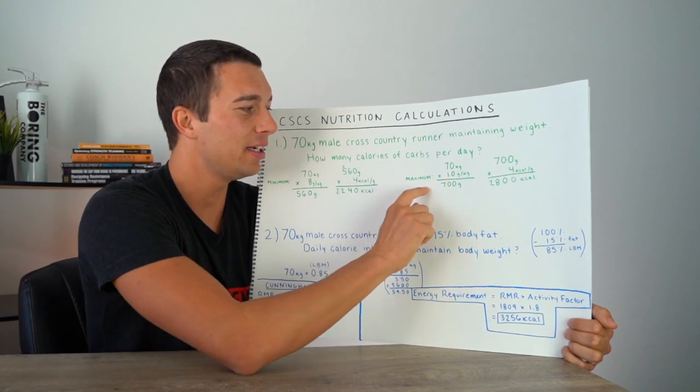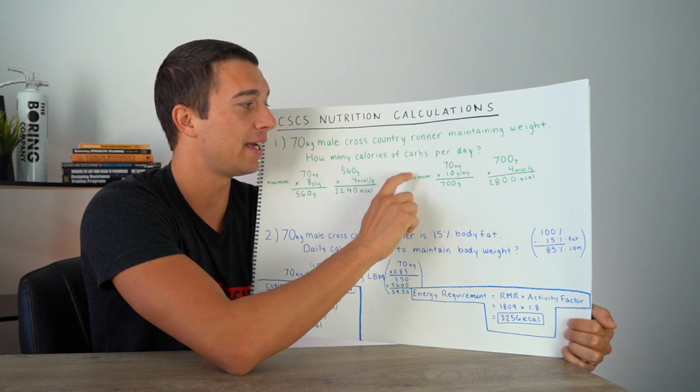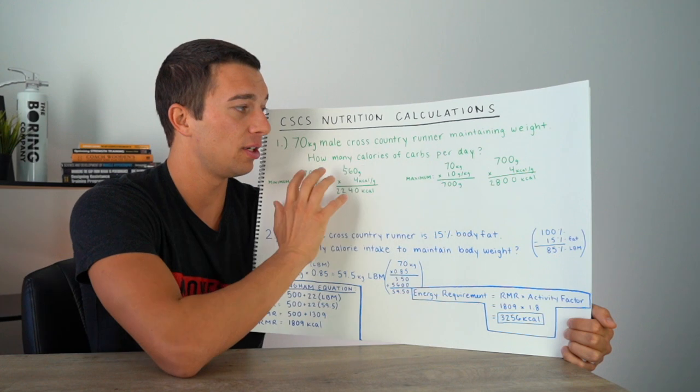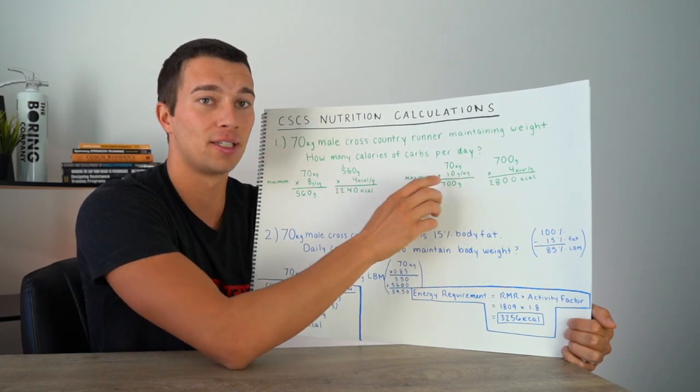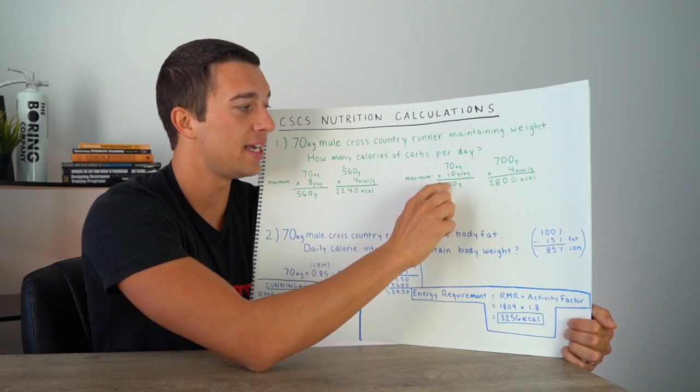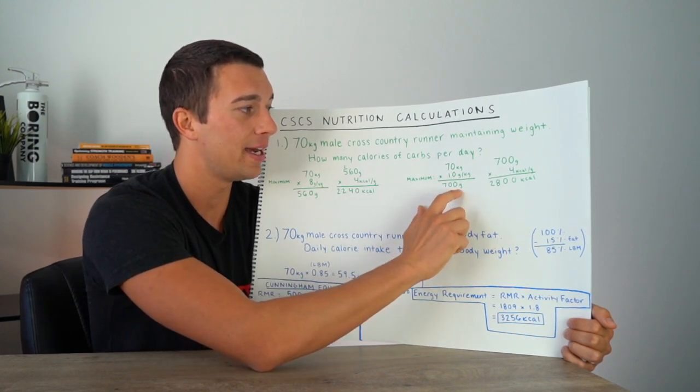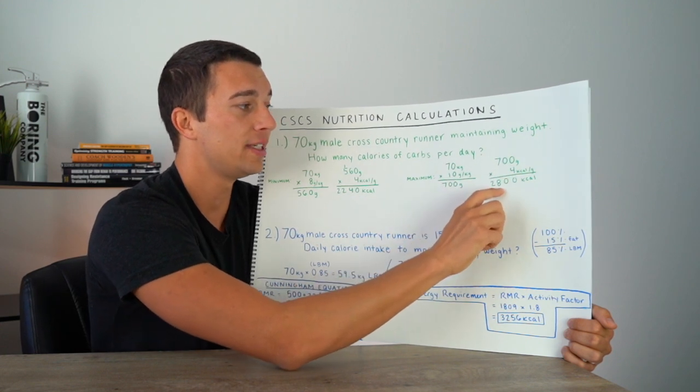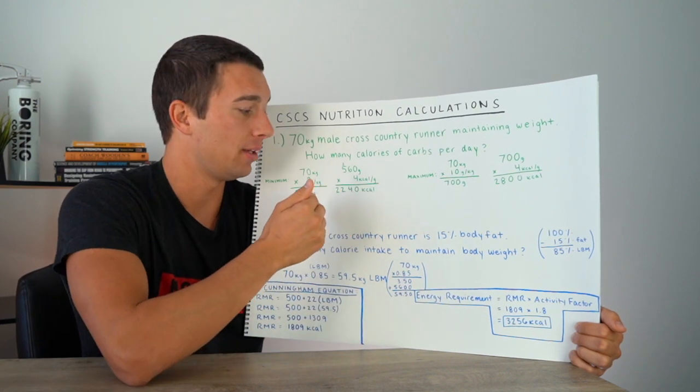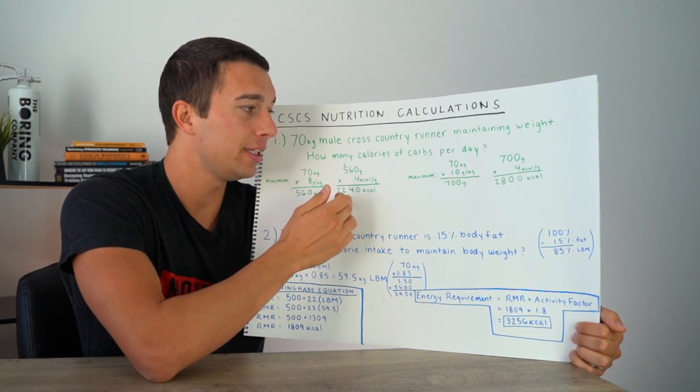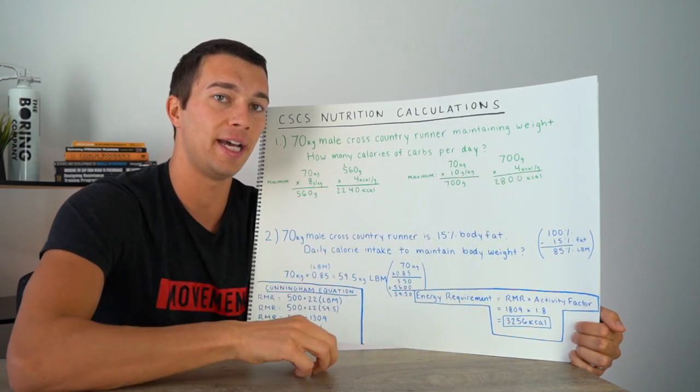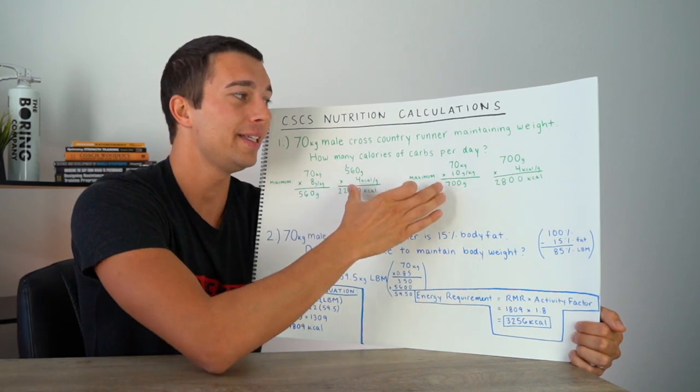All right, so let's go ahead on to the maximum here and calculate what's the maximum number of calories of carbohydrate per day for this cross-country runner. The same thing is gonna be done over here, just this time we're using 10, because the range is from eight to 10. So we did the minimum of eight, now we're gonna do the maximum of 10 to get 700 grams, 700 grams times four, 2,800 calories. What this means is that this cross-country runner should have a minimum of 2,240, a maximum of 2,800 calories of carbohydrate per day.